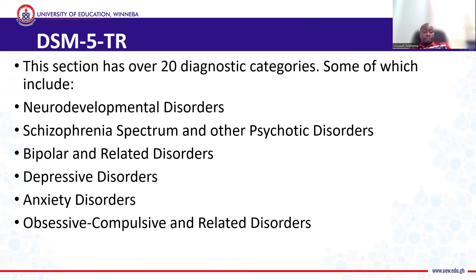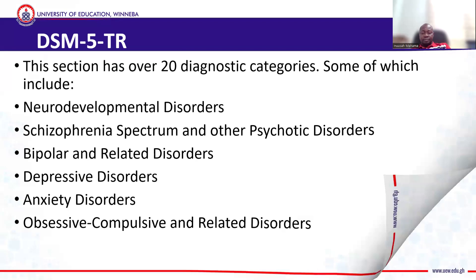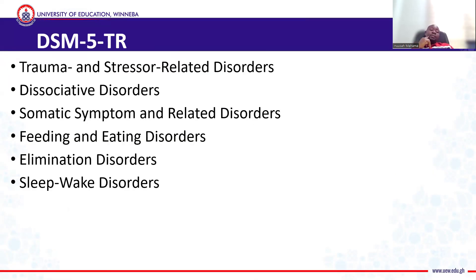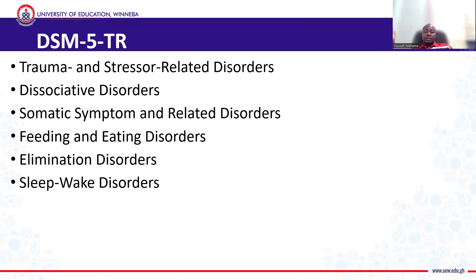Section three has over 20 diagnostic categories, some of which include neurodevelopmental disorders like autism, schizophrenia spectrum and psychotic disorders, bipolar and related disorders, depressive disorders, anxiety disorders, and OCD — obsessive compulsive related disorders. With DSM-5TR, trauma and stressor-related disorders are also discussed. Dissociative disorders — where you think a part of your body is not there, or you believe you are living outside your home. Somatic symptom disorder — where you think a part of your body is not there while you are carrying it. Feeding and eating disorders, including bulimia and binge eating. Elimination disorders — where some people feel they won't defecate or feel they are defecating constantly. And sleep-wake disorders.